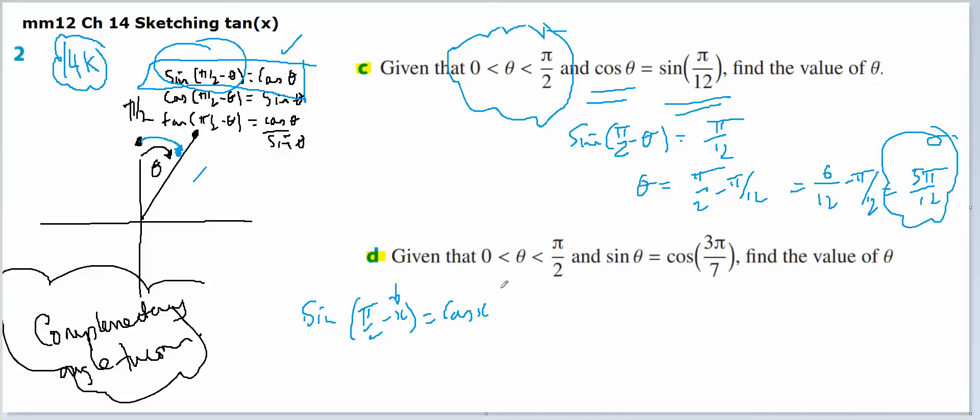And in question D, it's also in the first quadrant. The sine, so I know that the sine of theta equals cosine of π/2 minus θ. So the sine is going to be the same as the cosine of π/2 minus θ. It's going to equal the cosine of 3π/7, which means π/2 minus θ equals 3π/7.